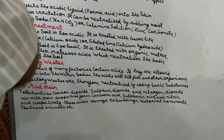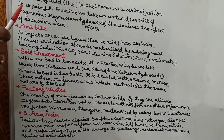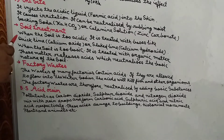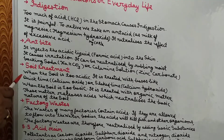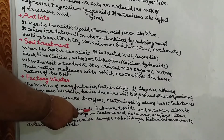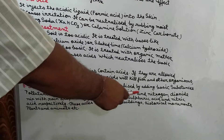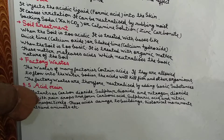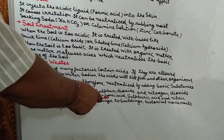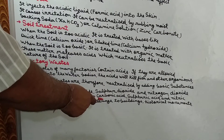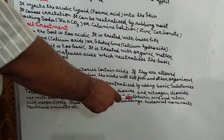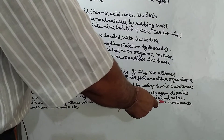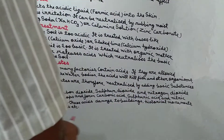Next topic is 5.5 — Acid Rain — which is a very important topic. Our atmosphere contains many pollutants — gases like carbon dioxide, sulfur dioxide, and nitrogen dioxide. These react with rainwater droplets: carbon dioxide forms carbonic acid, sulfur dioxide forms sulfuric acid, and nitrogen dioxide forms nitric acid, respectively.